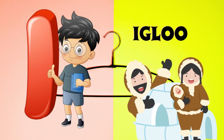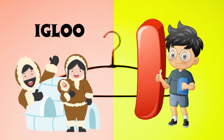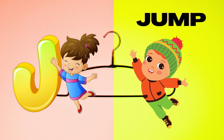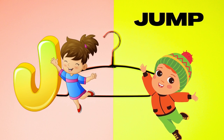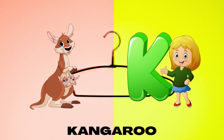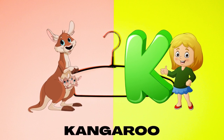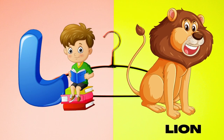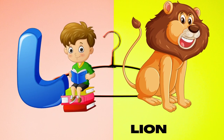I is for igloo, i-i-igloo. J is for jump, j-j-jump. K is for kangaroo, k-k-kangaroo. L is for lion, l-l-lion.